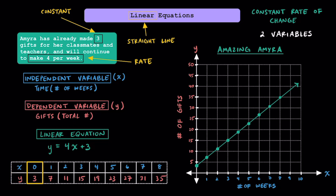Here, we can see if 0 weeks go by, Amira will still have 3 gifts that she's created. After 1 week goes by, she'll have a total of 7 gifts made, and at 2 weeks she'll have 11 total gifts made. As time goes on and more weeks go by, Amira is going to have more gifts made to give to her classmates and her teachers.